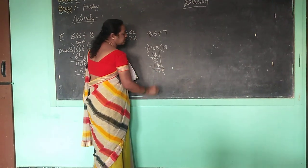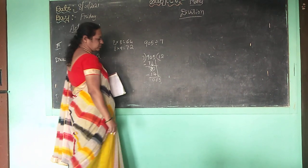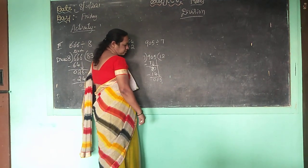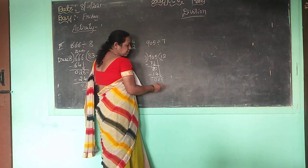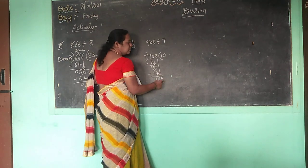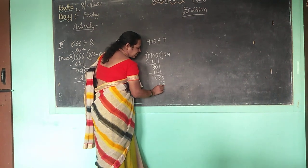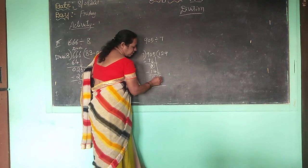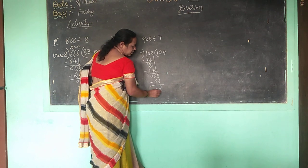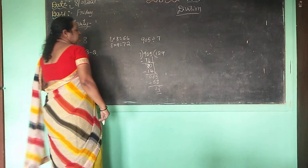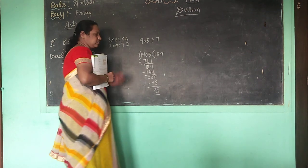We have 65. From 7 table: 7 eights are 56, 7 nines are 63. So take 7 nines are 63. 5 minus 3 is 2, 6 minus 6 is 0. So this is the quotient and this is the remainder.